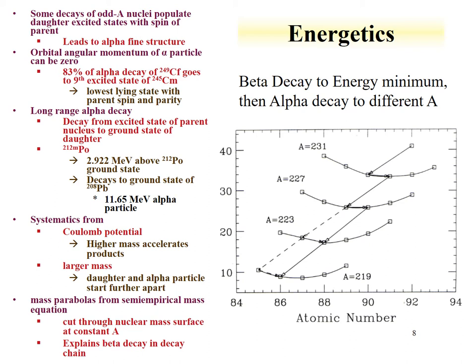We can understand why certain isotopes have fine structure and certain don't. For instance, even-even nuclei, since their spin and parity is 0+, will often decay to the ground state of the daughter, because their spin and parity is 0+ and the alpha particle also has 0+ spin and parity. We can also observe something called long-range alpha decay, which is really the decay from a metastable state to a ground state of the daughter.